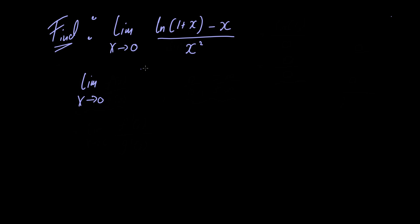So we have the derivative of the outside part which is 1 over 1 plus x multiplied by the derivative of the inside part which is just 1, minus the derivative of x which is just 1, divided by 2x.